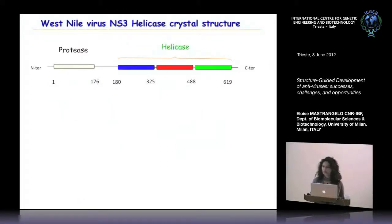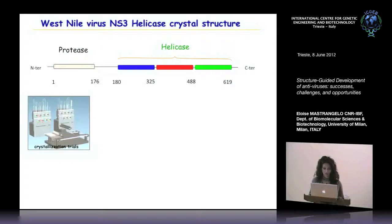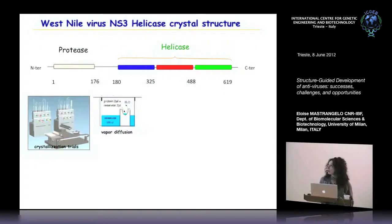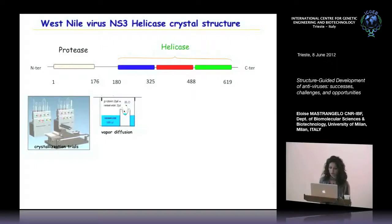We wanted to inhibit the non-structural protein 3, which shows N-terminal protease activity and C-terminal helicase activity. In our lab, we performed thousands of crystallization trials using a robot, which allows us to mix from nano to microliters of protein with a reservoir solution. The reservoir solution is composed of precipitant agents such as salts, organic solvents, or other agents that help the protein form crystals.